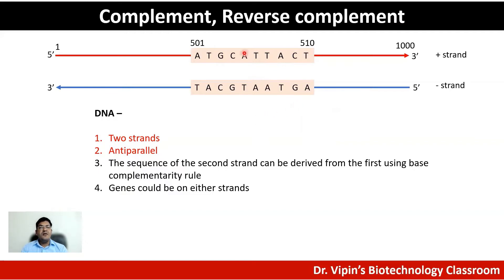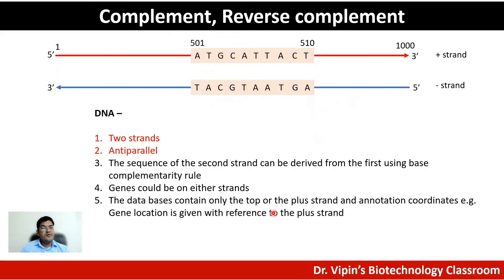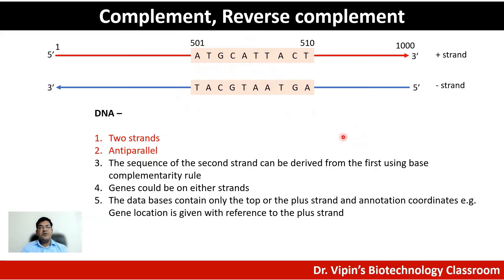That is why it is known as the reverse complement. The database contains only the top or plus strand, and the annotation coordinates — for example, gene location — are given with reference to the plus strand. It is mentioned whether the gene is present on the plus strand or the minus strand. If it is on the plus strand you can directly retrieve the sequence, but if it is on the minus strand you must complement it and read it in the reverse direction — that gives you the reverse complement.